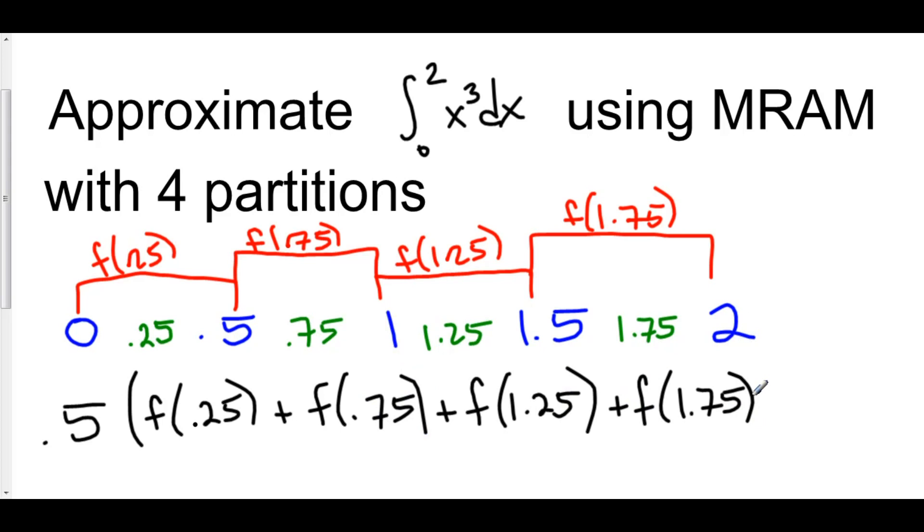And finally, once you do all of this out, your total area is 2.625. That is the approximation of the area under the curve of x³ from 0 to 2 using a mid Riemann approximation.